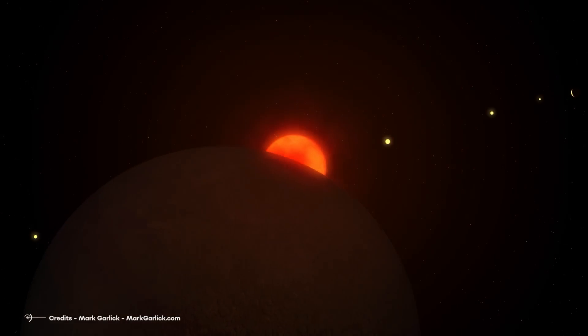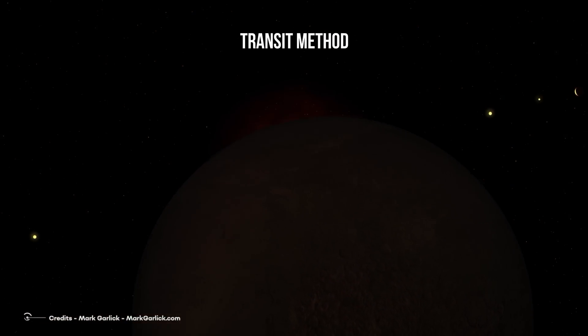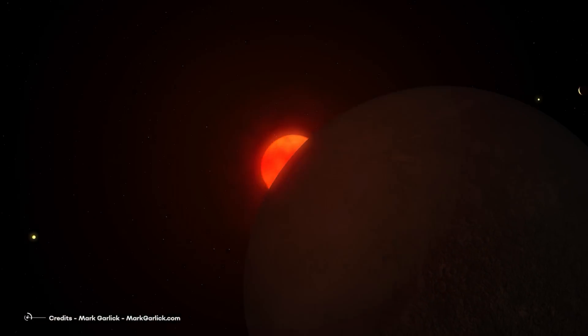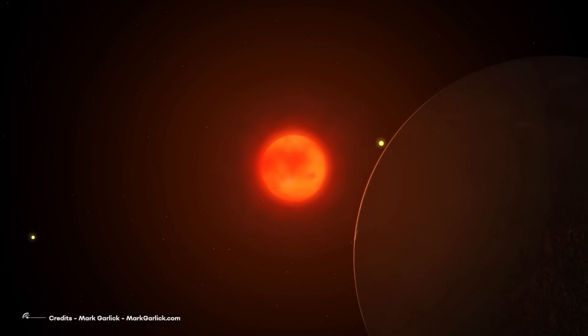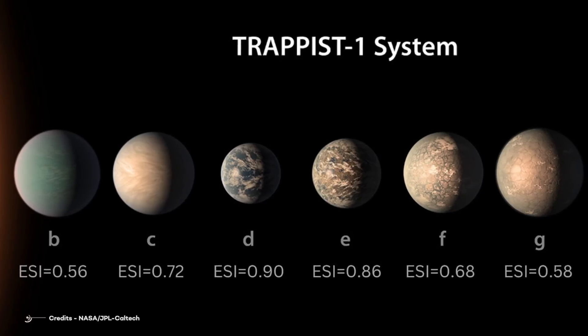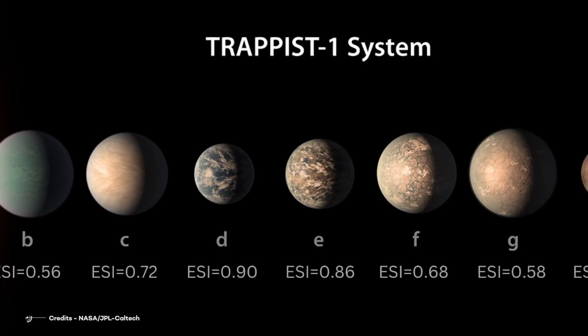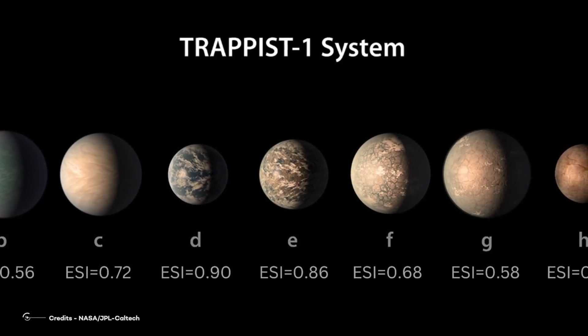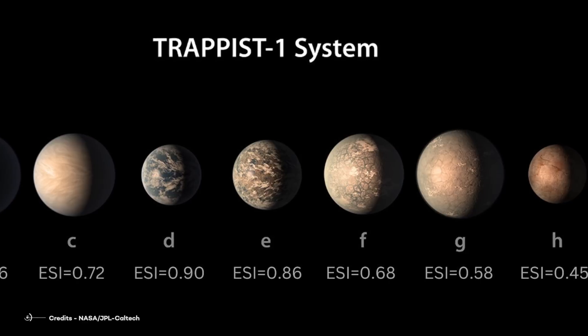The method used to find these planets is called the transit method, and it is vastly used in astronomy. As of today, we know about seven rocky planets—TRAPPIST-1 b, c, d, e, f, g, and h—closely orbiting their diminutive host star.